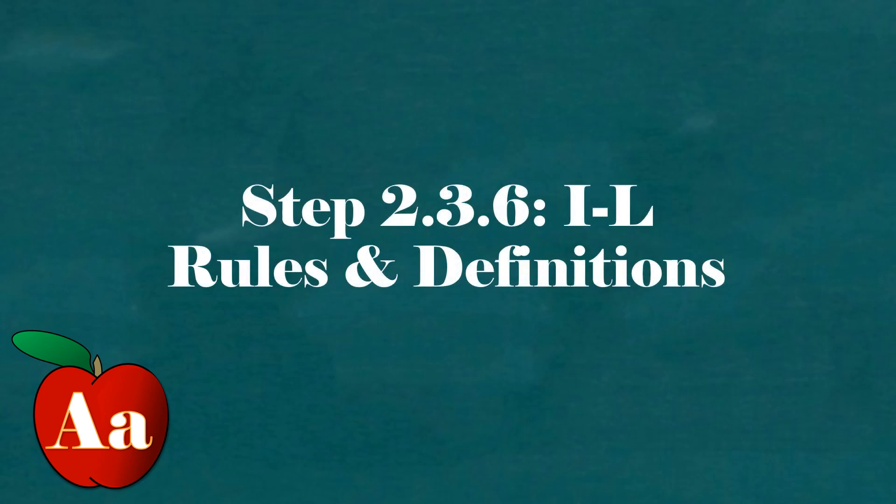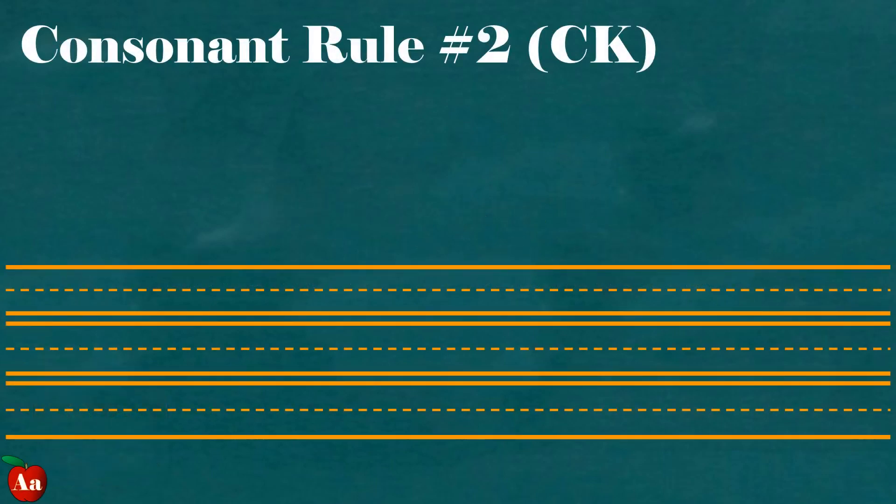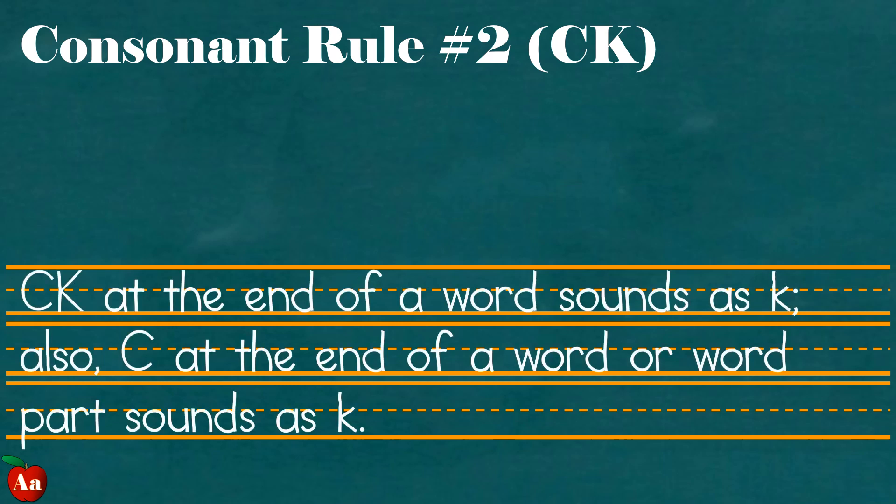Let's review the rules and definitions that accompanied this group of sounds in step 2.3. Consonant rule number two, CK. CK at the end of a word sounds as K. Also, C at the end of a word or word part sounds as K.